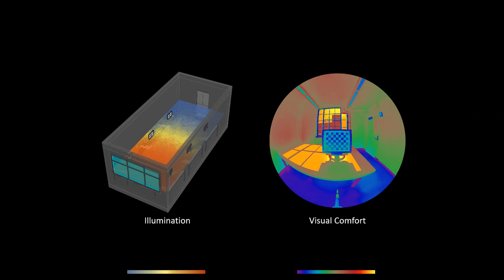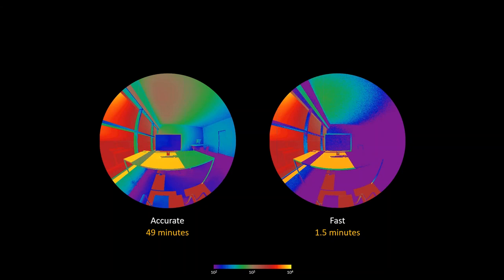I'm going to focus on daylight simulation, which encompasses two kinds: illumination simulation—answering the question of whether we have enough light entering the space through daylight to perform tasks—and visual comfort simulation—answering whether we have too much light or too much contrast that could cause pain to the human visual system. Throughout this presentation I'll be using fisheye projection images shown in false color, where purple represents very dim parts and yellow represents very bright parts.